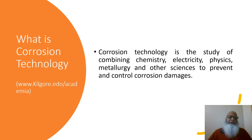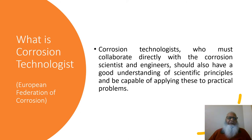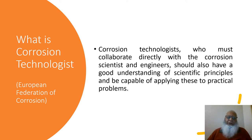This slide shows what is corrosion technology, taken from a cited reference. It reads that corrosion technology is the study combining chemistry, electricity, physics, metallurgy, and other sciences to prevent and to control corrosion damage. According to the European Federation of Corrosion, technologists who collaborate directly with corrosion scientists and engineers should also have a good understanding of scientific principles and be capable of applying these to practical problems. Usually young engineers don't understand the subtle differences between corrosion science, corrosion engineering, corrosion technology, and corrosion technologists.